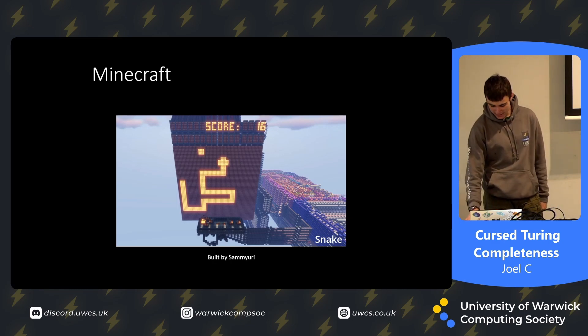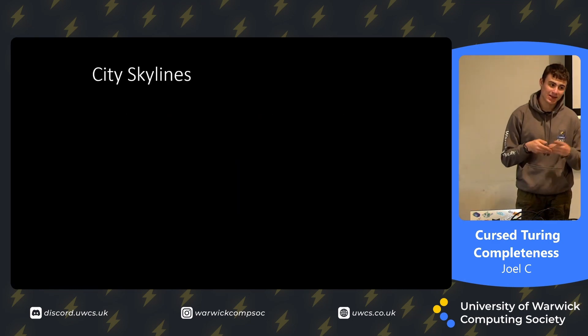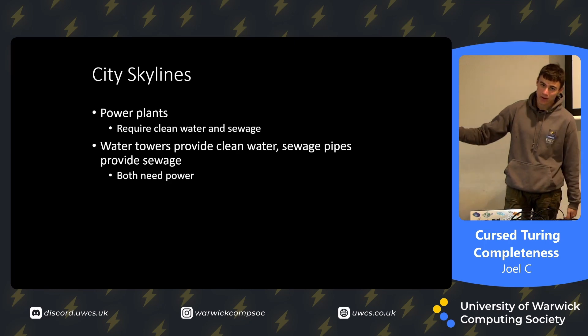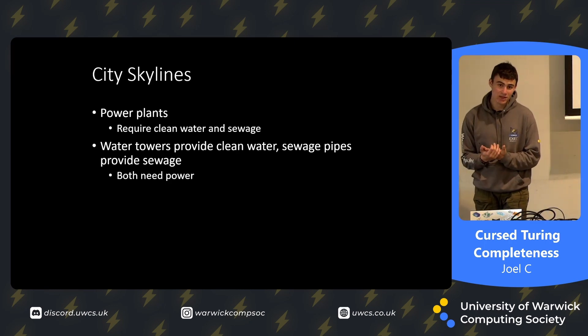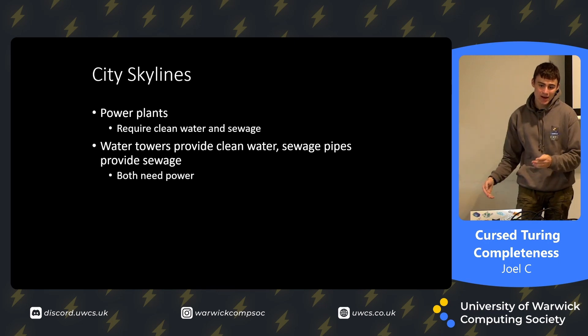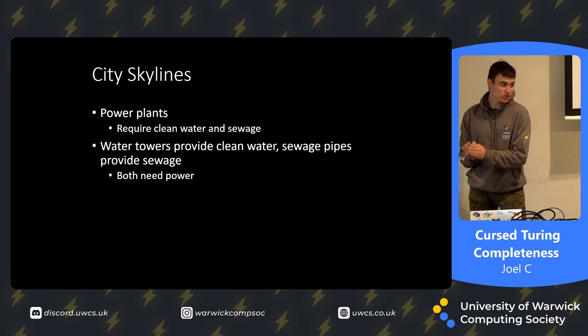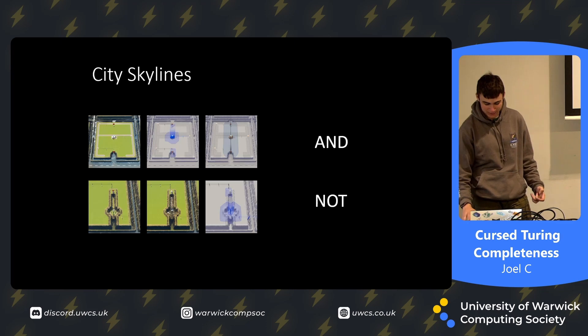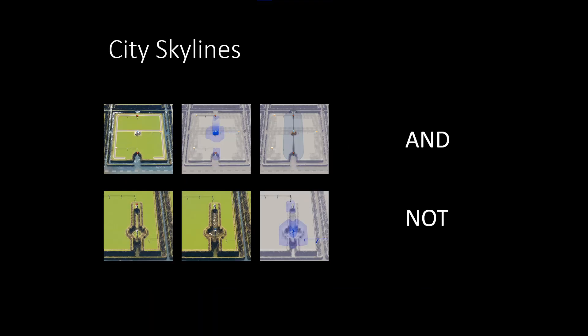Another game that's Turing complete through logic gates is Cities Skylines. It's less obvious how you make a logic gate in Cities Skylines, but you can. It requires a power plant and also sewage. Power plants need clean water and sewage to run; water towers provide clean water and sewage pipes provide sewage, but both need power. You can make an AND gate by having a power station that deactivates if you don't provide it enough sewage or water — the only way to get output is if you have both.